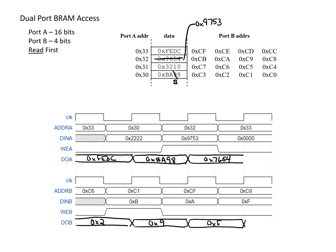For the last address in read-first mode: port A looks at address 33 — its value hasn't changed, so we still read out FEDC. Port B looks at address C8, which now has the recently written value of 0x3. There are two areas where the value changed from the write-first example: the value of 0x9 from port B and the value of 0x7654 from port A. This concludes the walkthrough of accessing a BRAM with different width ports in both read and write-first mode.